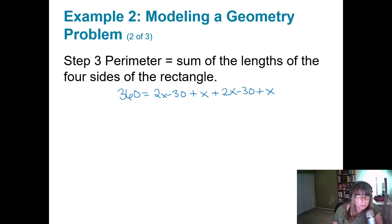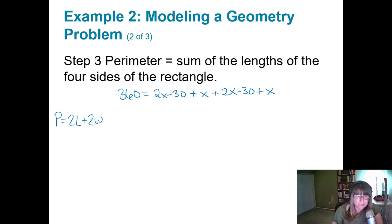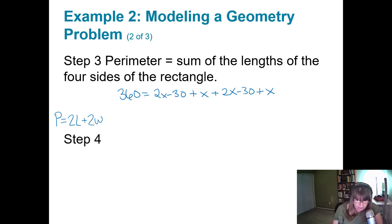If you remember your perimeter formula and use p equals 2 lengths plus 2 widths, that's fine too. I'm going to add up the lengths of all four sides. Let's solve for x. Adding like terms: 2x and x gives 6x on one side; minus 30 and minus 30 is minus 60. So 360 equals 6x minus 60.